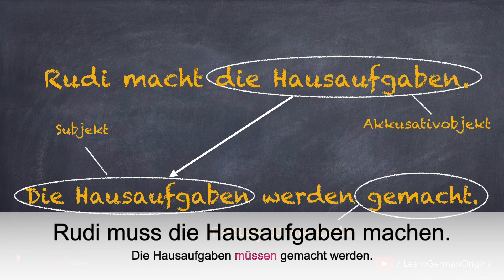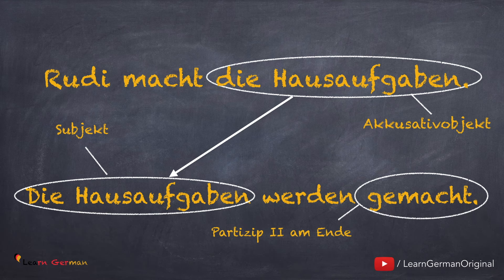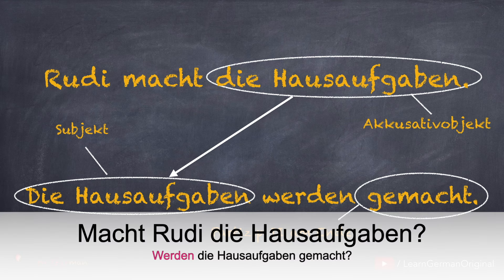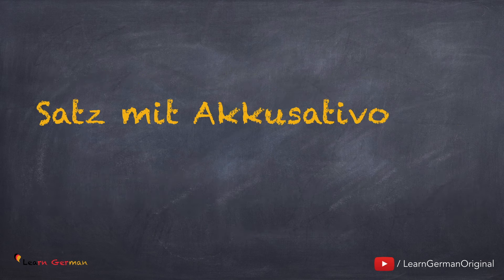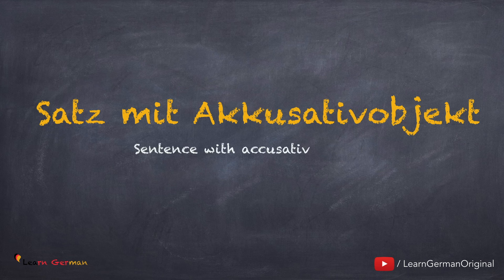Rudi muss die Hausaufgaben machen. Die Hausaufgaben müssen gemacht werden. Wenn das hier als eine Frage stehen würde: Macht Rudi die Hausaufgaben? Dann ist der Satz im Passiv: Werden die Hausaufgaben gemacht? Das waren jetzt einfache Versionen von dem Satz — einmal mit Modalverb und einmal als Frage.